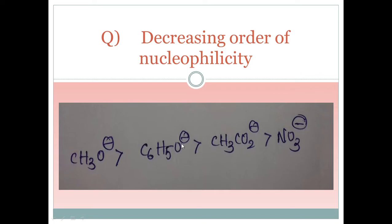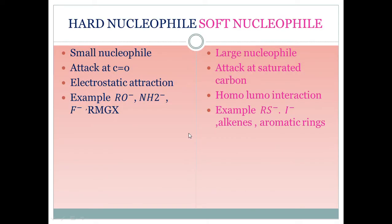This is an example that has appeared in the NET exam. They give four groups and ask for the decreasing order of nucleophilicity. Nucleophilicity means ability to provide electrons to electrophiles. Here, CH₃O⁻ (an alkoxide, RO⁻) can give electrons best, followed by phenoxide group, then CH₃CO₂⁻ which has resonance structures, and finally NO₃⁻ because it involves the most electronegative group.